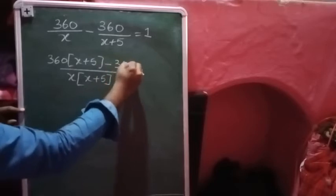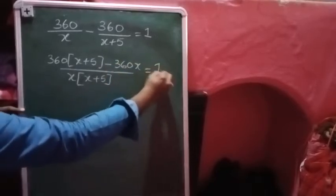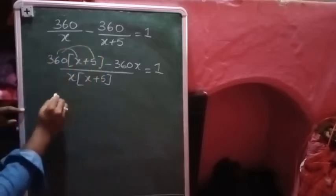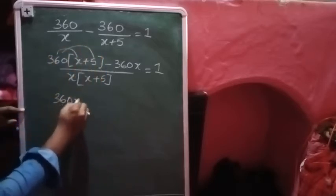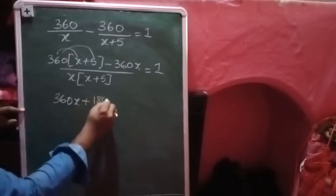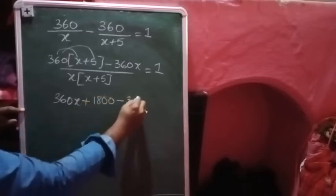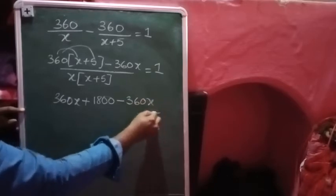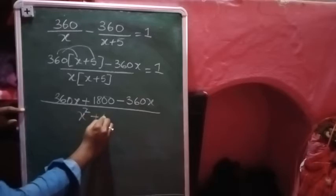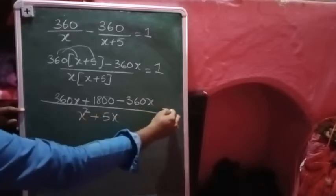These two you have to cross multiply like this: 360 in the bracket x plus five minus 360 x, which equals to one. Then 360 multiplied becomes 360 x plus 360 into five, which is 1800, minus 360 x, divided by x square plus five x, which equals to one.